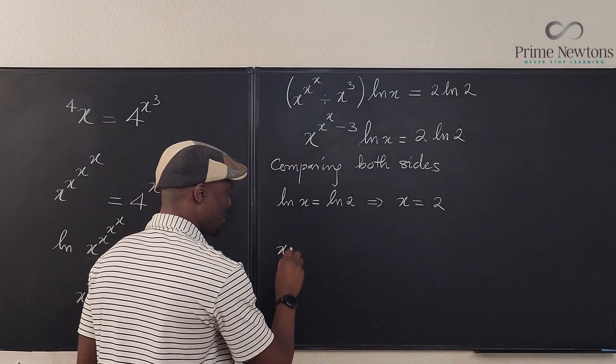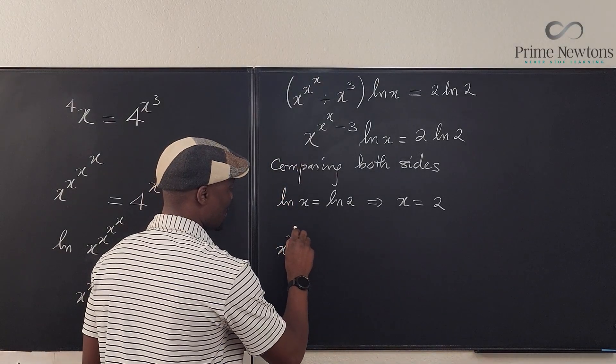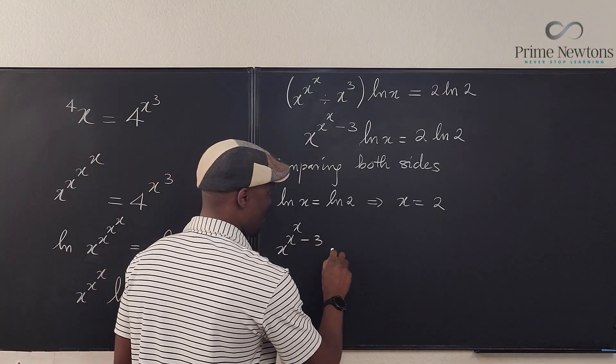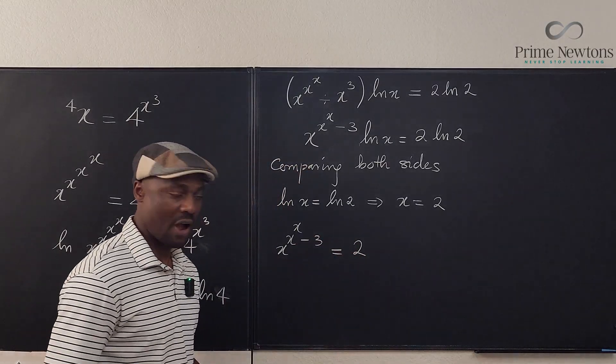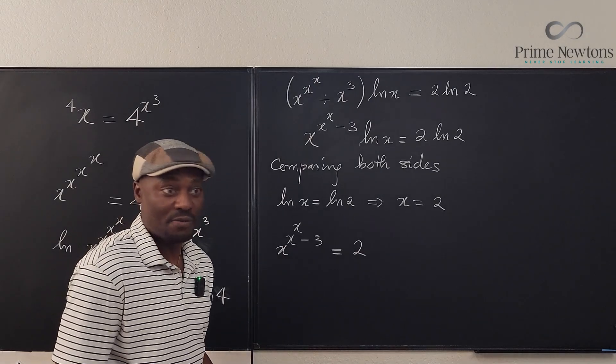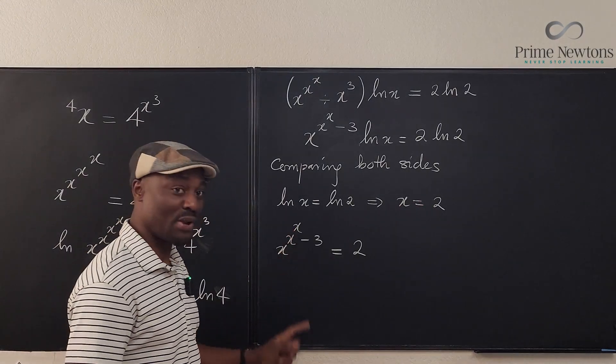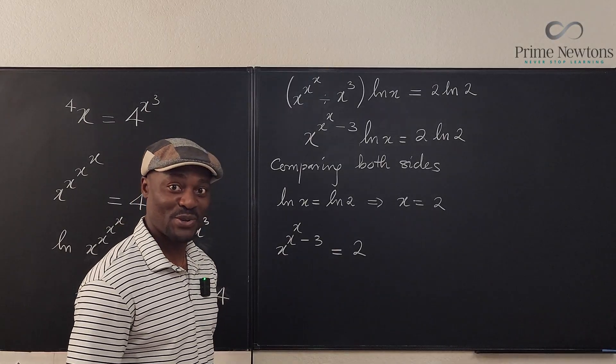And then I said let x to the x to the x minus 3 be equal to 2. Is this true? How can I solve this? Well, I couldn't solve it because I already said x is equal to 2, so I came and plugged it in here just to see if I was going to get 2.